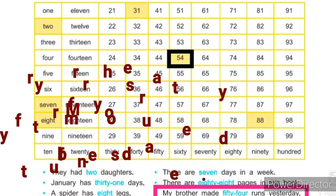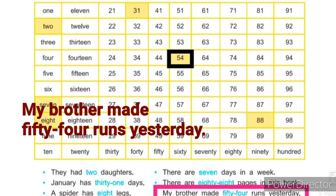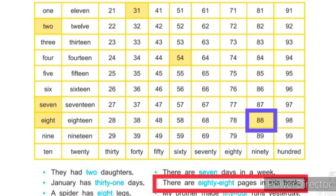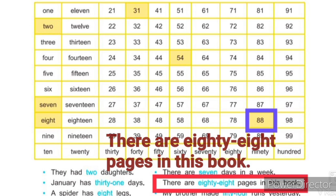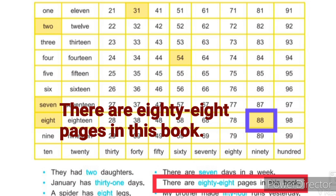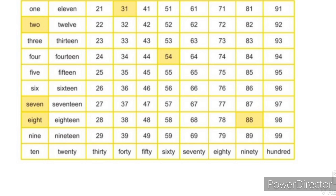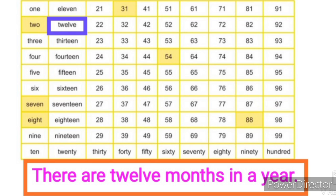Next example: 54 — 'My brother made 54 runs yesterday.' The next colored number is 88, and the sentence is 'There are 88 pages in this book.' And the last one: 'There are 12 months in a year.'